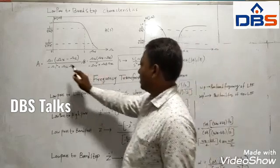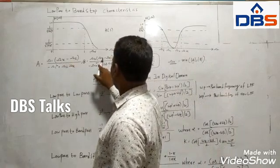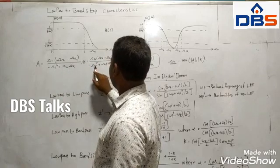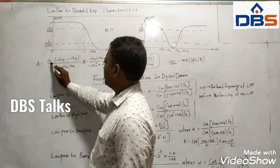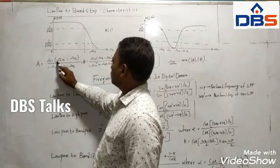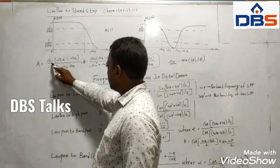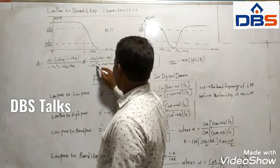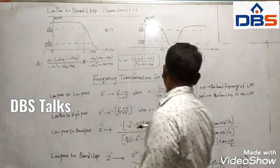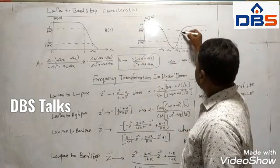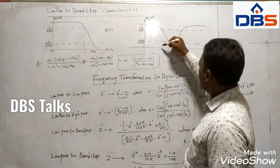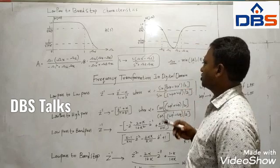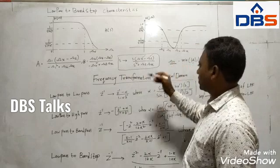For the band-stop transformation, omega_r is the minimum of magnitude A and magnitude B. What are A and B? These are the A and B values: omega_U minus omega_L is common. For A, compute (omega_1 times omega_U minus omega_L) divided by (omega_1 squared minus omega_L times omega_U). For B, substitute omega_2 instead of omega_1. You calculate the magnitudes of A and B from the given specifications, and the minimum value is selected as omega_r.